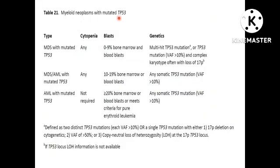Myeloid neoplasms with mutated TP53 is a broad category in the International Consensus Classification, including three subtypes: MDS with mutated TP53, MDS-AML with mutated TP53, and AML with mutated TP53. This represents a biological continuum — MDS progresses to AML, with an intermediate MDS-AML phase — which is why it has been defined as a separate entity in the new classification.